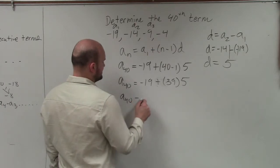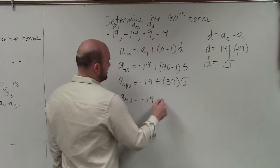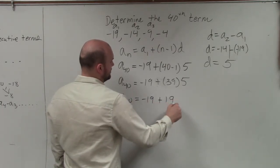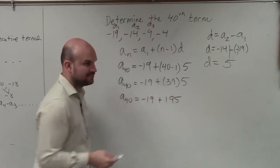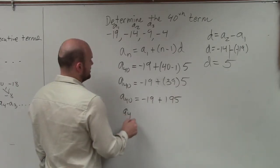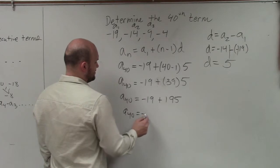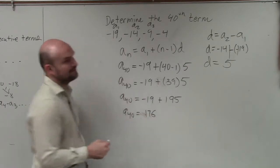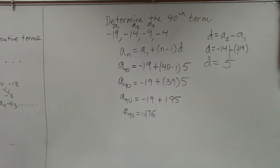So I have a to the 40 equals negative 19 plus 195. And then you simply subtract, and you get positive 176. We have some students that are learning.